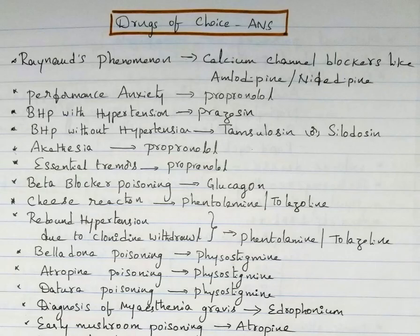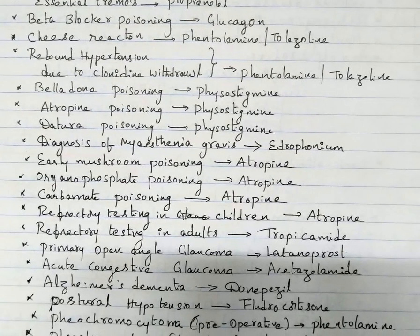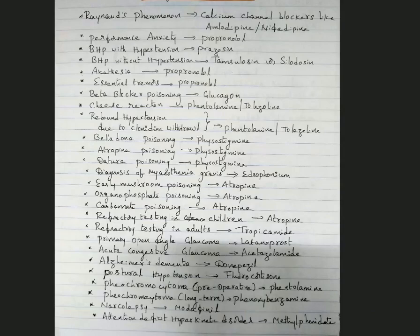Quick revision: Raynaud's — calcium channel blockers (amlodipine/nifedipine). Performance anxiety — propranolol. BHP with hypertension — prazosin; without hypertension — tamsulosin or silodosin. Akathisia — propranolol. Essential tremors — propranolol. Beta blocker poisoning — glucagon. Cheese reaction — phentolamine. Clonidine withdrawal — phentolamine. Belladonna, atropine, datura poisoning — physostigmine. Myasthenia gravis diagnosis — edrophonium test; treatment — pyridostigmine. Early mushroom, organophosphate, carbamide poisoning — atropine.